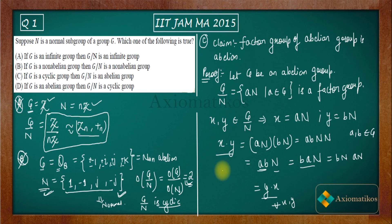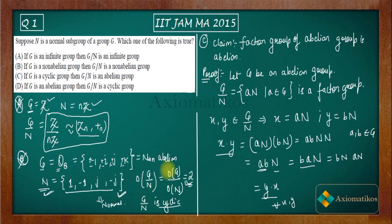So we have proved the more general claim that the factor group of an abelian group is always abelian. Your option C suggests that if G is cyclic, then G by N is abelian — but we proved that even if G is only abelian (not necessarily cyclic), G by N will still be abelian. So C is the true option. Thank you.